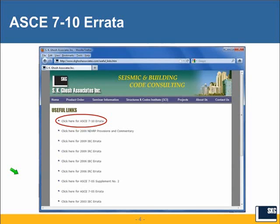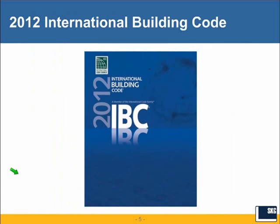This is a snapshot from our website where we post all errata for the various codes. Because ASCE 7-10 was placed on a compressed schedule, things were rushed, and you will find more errata for this publication than you would normally expect. We wanted to dedicate one slide to mentioning the errata and where you can find it. We would suggest that you get a red pen and make those revisions in your ASCE 7-10.